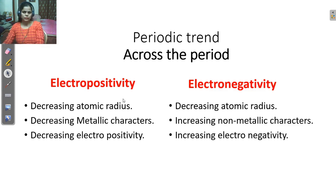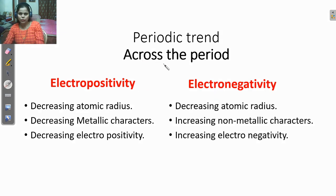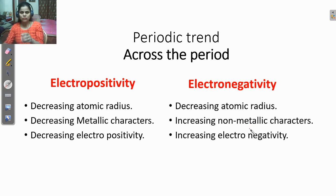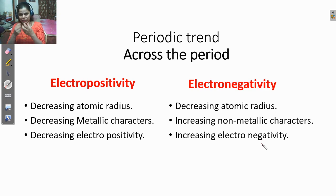So observe across the period. What is the periodic trend? Electronegativity increases — just as I said. By the pictorial diagram, across the period atomic radius decreases, which increases the non-metallic character because the elements cannot easily lose electrons. That is why electronegativity increases. Electronegativity means gaining the electron; it is very difficult to lose electrons. And electropositivity means losing the electron; it is very difficult to gain the electron.